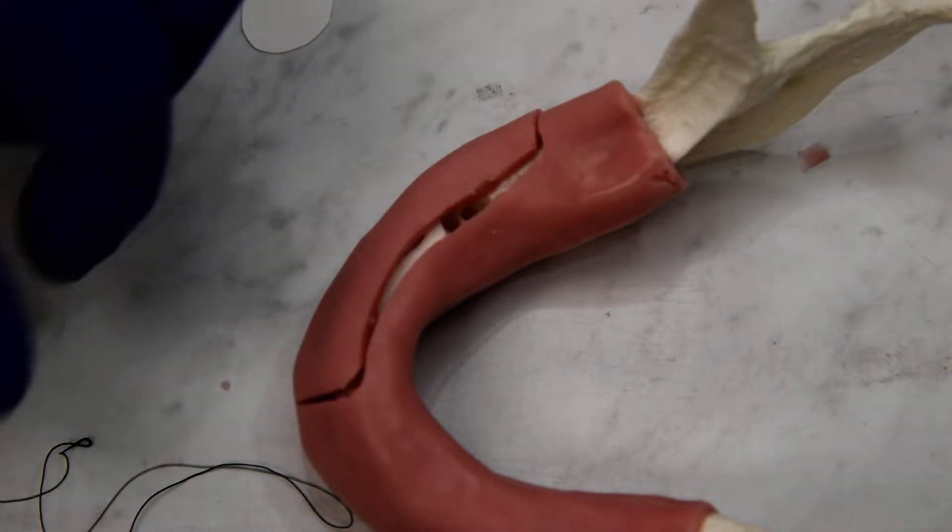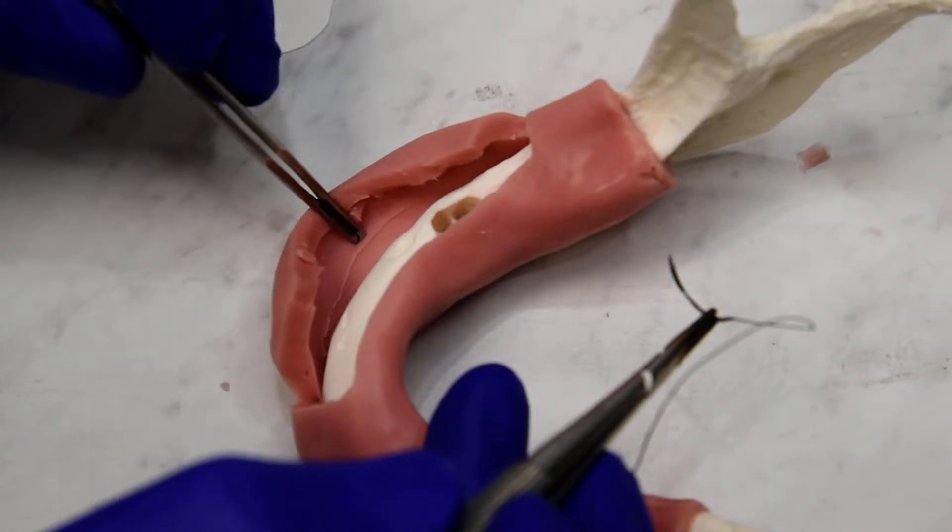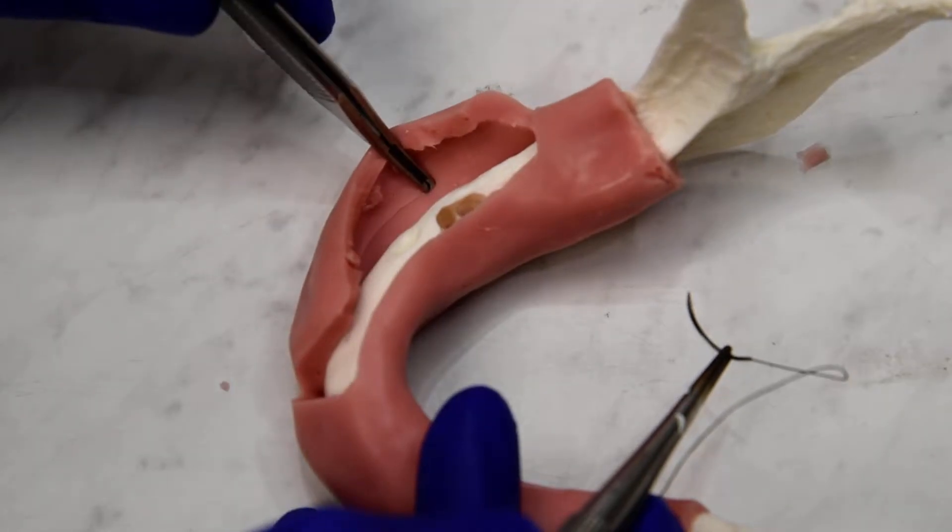So for the W periosteal, which is a subperiosteal mattress with a twist, we have a model here that's been aggressively flapped so that we can get a little bit better visualization of what our actual bites are.